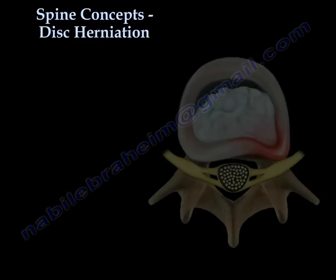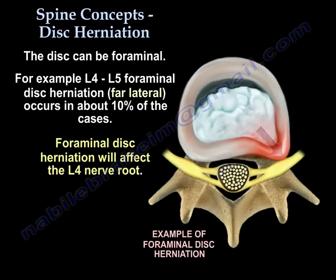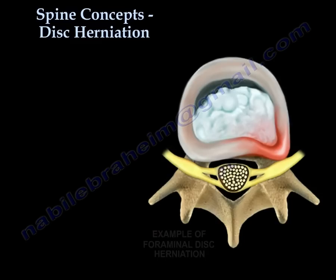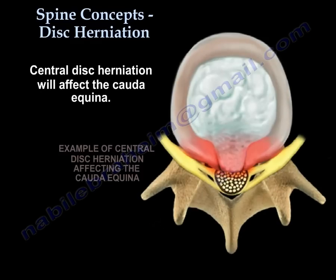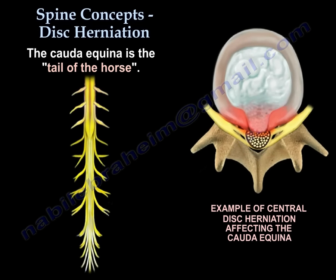But if you have an L4-L5 far lateral or foraminal disc herniation, which can happen in about 10% of cases, then you will get the L4 nerve root. But if you have a central disc herniation, you will get cauda equina — it is the tail of the horse. Don't mess with the horse's tail.